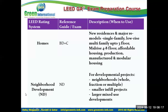LEED Home covers all new residential buildings up to eight floors. From nine floors onwards it is considered new construction. Until eight floors it is home — up to three floors is multi-family low-rise, and four to eight floors is mid-rise. Single-family buildings have separate requirements.